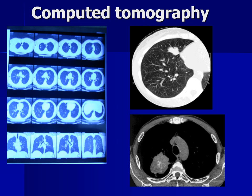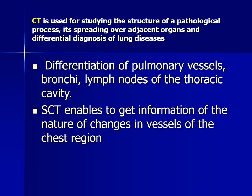Another method is CT — computed tomography. Here we see scans of the chest in axial view — axial slices are the main ones in CT — and also in coronal, frontal slices. There are two windows where we can see lung tissue and soft tissues. CT is used for studying the structure of a pathological process, its spreading over adjacent organs, and differential diagnosis of lung diseases. Spiral CT enables information about changes in vessels of the chest region.